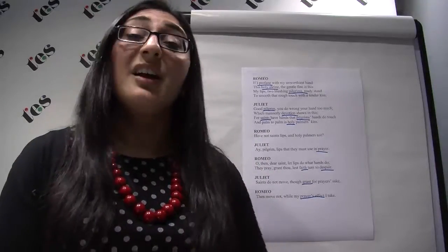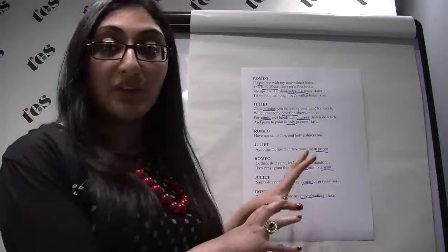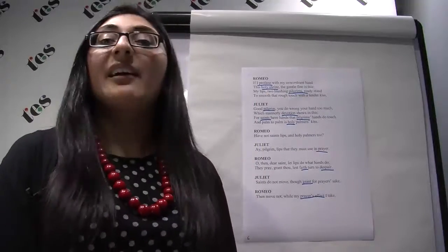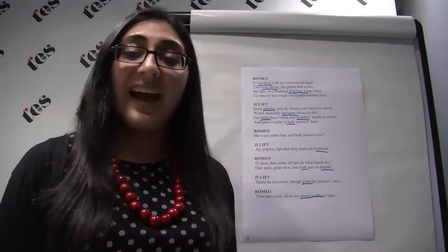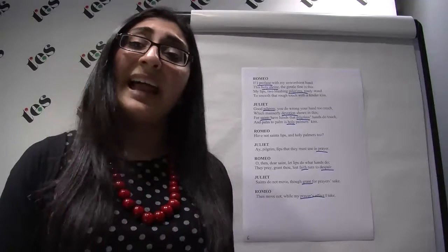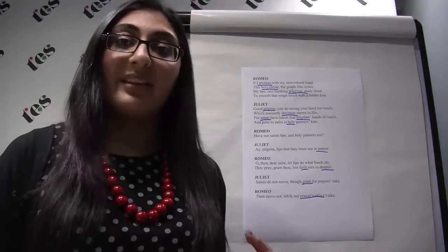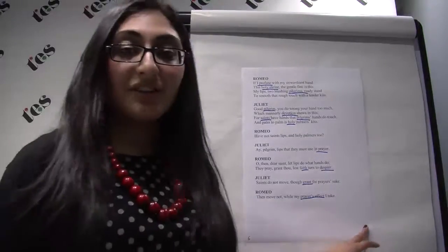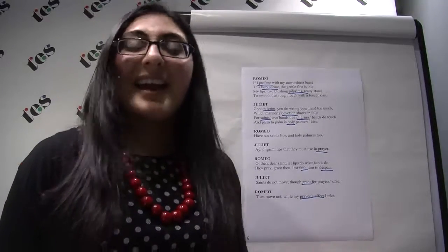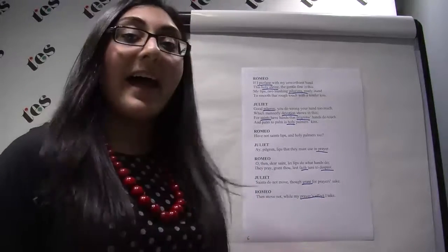All the underlined words have religious connotations — specifically associated with Catholicism: holy shrines, pilgrims, devotion, holy palmers, saints, prayer, faith, granting prayer, prayers' effect. These characters are essentially flirting, but instead of simple introductions, they speak through a massive conceit — the language of religion and prayer specifically. No other characters in the play talk like this. Shakespeare is telling the audience through language and this specific conceit that these two characters are immediately able to connect with one another. Romeo thinks he's being clever, but Juliet turns the conceit to her own benefit too, extending it until Romeo actually steals a kiss.